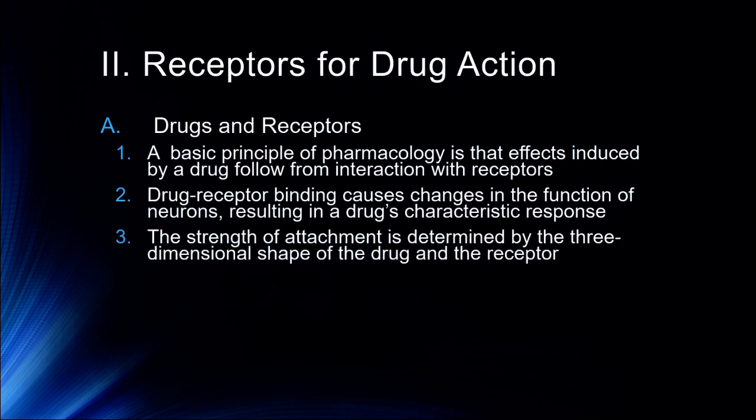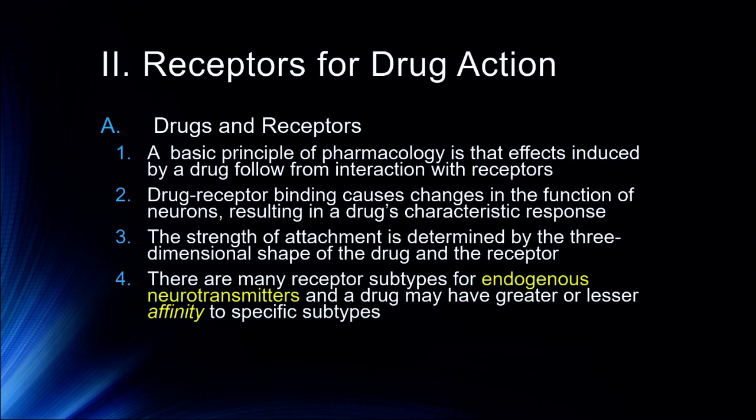The strength of attachment is determined by the three-dimensional shape of the drug and the receptor — like a lock and a key. Isomers of the same drug that have a reversed shape may have a very strong effect or a weak effect because they don't attach as well. There are many receptor subtypes for endogenous neurotransmitters. When discussing antidepressants, for instance, a particular drug may have an affinity for 5-HT2 or 5-HT3, or for dopamine D1 and D2 receptors.